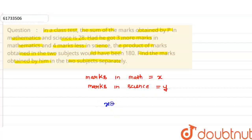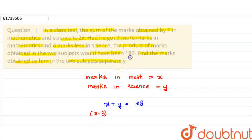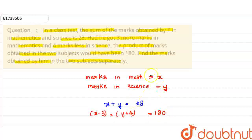The sum of marks obtained by P in mathematics and science is 28. So x plus y equals 28. Now, if the marks in maths are reduced by 3, then the math marks become x minus 3. We have to find the marks in math and science separately.